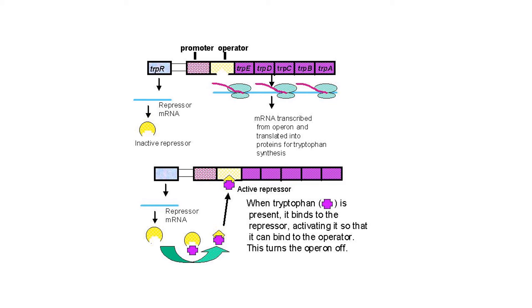In the lower half of this picture, we have our regulatory gene again — it's being transcribed and translated, producing the repressor protein. But now this is an example of turning the repressible operon to the off position. We don't want to transcribe and translate these structural genes because we actually have tryptophan present in the environment. Why would a bacteria use resources to make tryptophan when it can use tryptophan already present in the environment for free? The repressor protein is now active, and it's actually tryptophan itself that activates it.